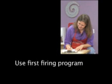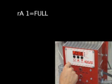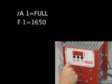For this initial firing, we will use the first firing program and require only one segment. Writing down the information in the following form will allow us to know what we need to enter into the computer as it asks us specific questions. One segment includes the rate of climb at full — this tells the kiln to heat up as fast as possible. Our set temperature is 1650 and our hold time is zero; we do not want to soak at this temperature for any time.